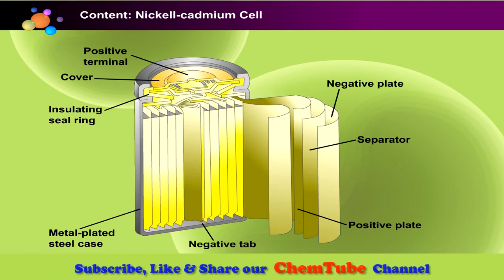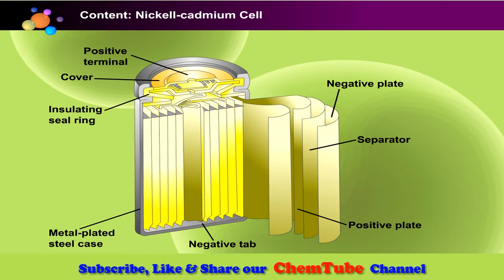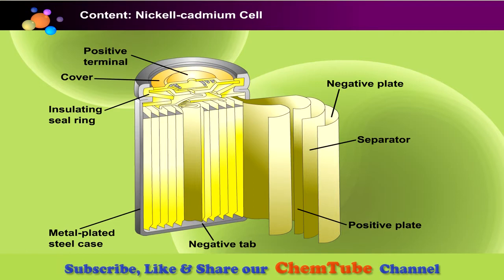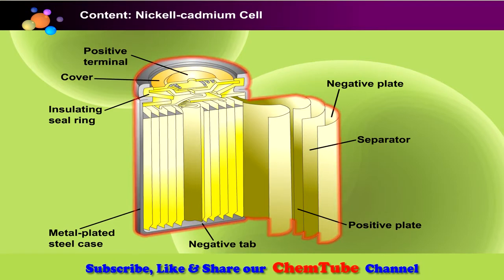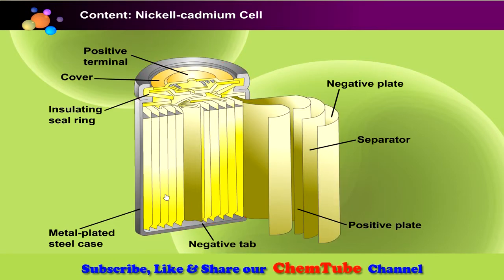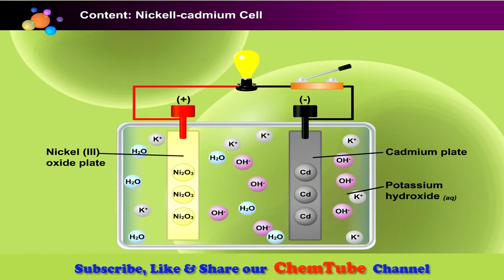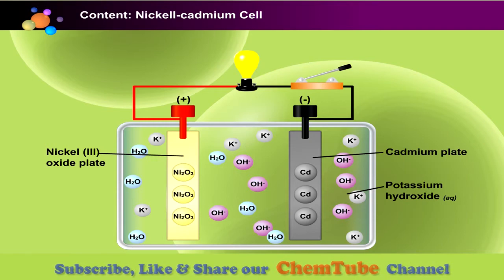Now let us look at the cross-section of a nickel-cadmium cell. Click at the cell to get a closer look. What are used as terminals? What is the electrolyte?